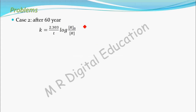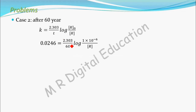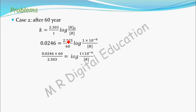Using the same first-order equation with k = 0.0246: 0.0246 equals 2.303 divided by time of 60 years, multiplied by log of 1×10⁻⁶ divided by R, where R is the concentration remaining after 60 years. Rearranging by moving 60 and 2.303 to their respective sides, we simplify the expression.